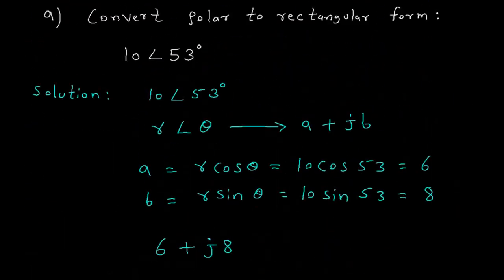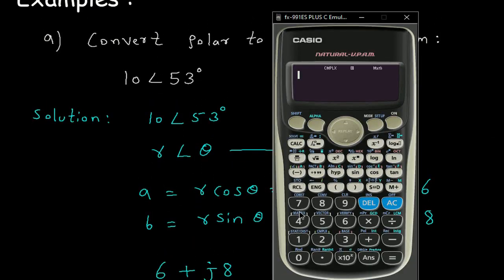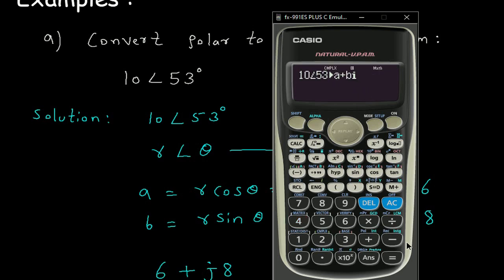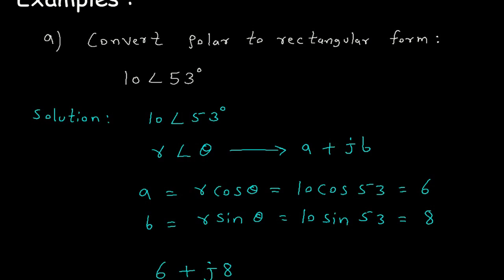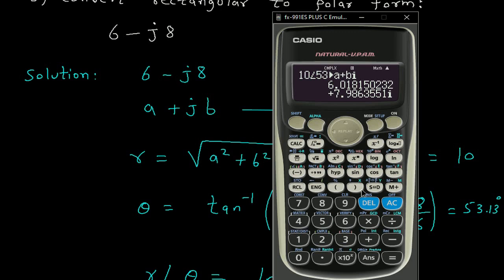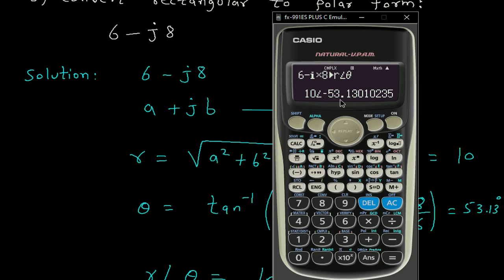We can also verify the answers using a calculator — the calculator is in complex mode. For 10 at an angle of 53 degrees, press Shift 2 then 4 to convert to rectangular form, which gives 6 plus j8. For 6 minus j8, enter 6 minus i times 8, press Shift 2 then 3 to convert to polar form, which gives 10 at an angle of minus 53.13 degrees.